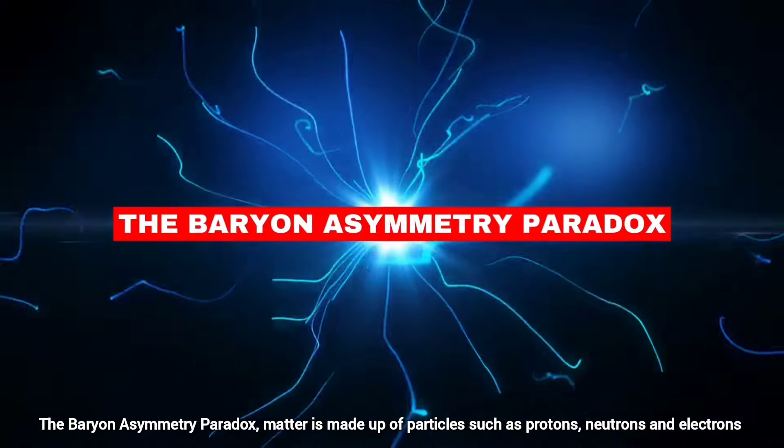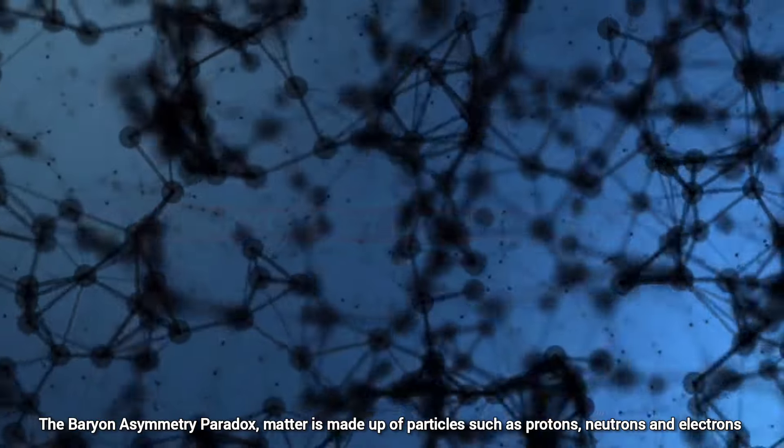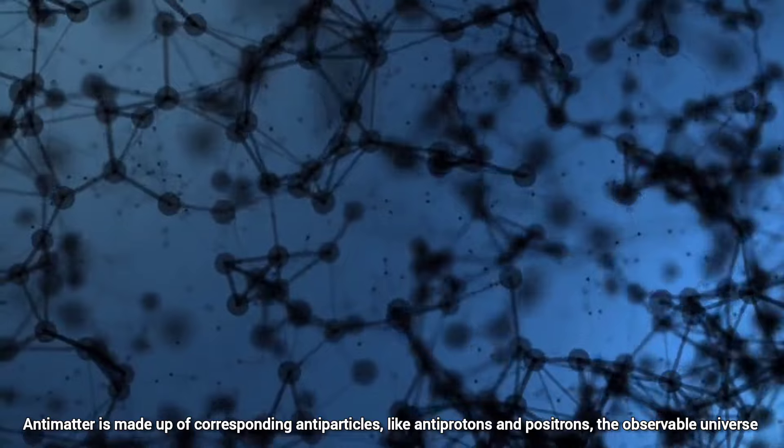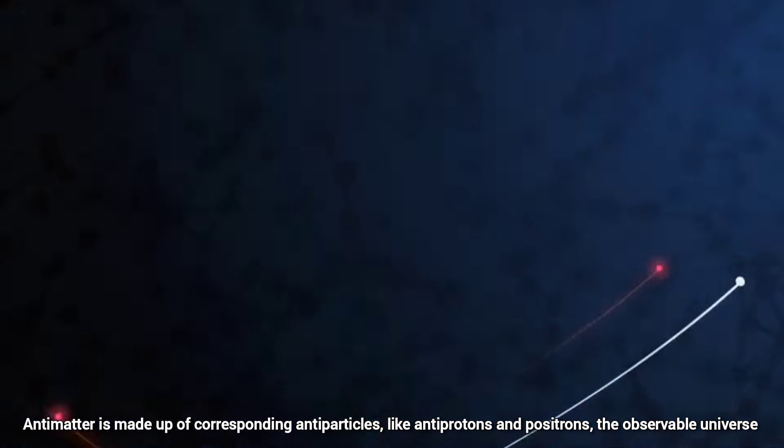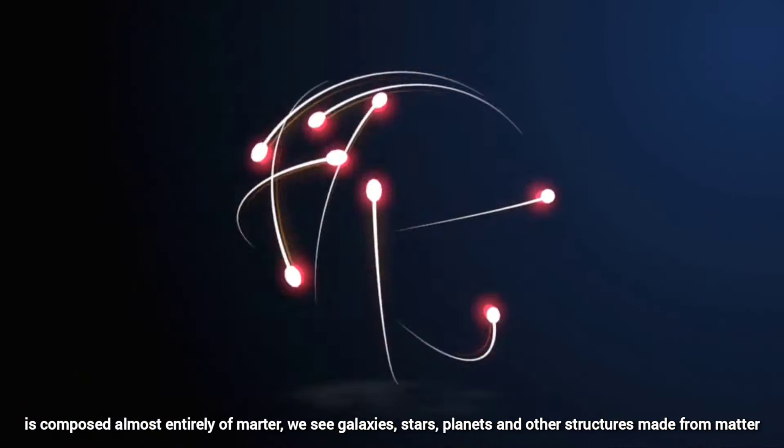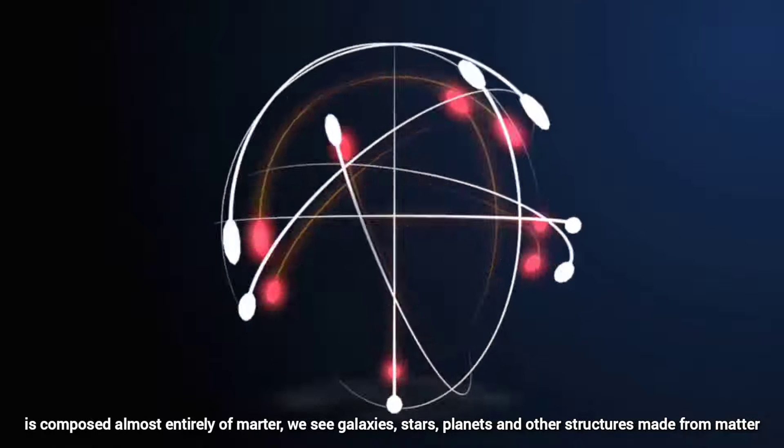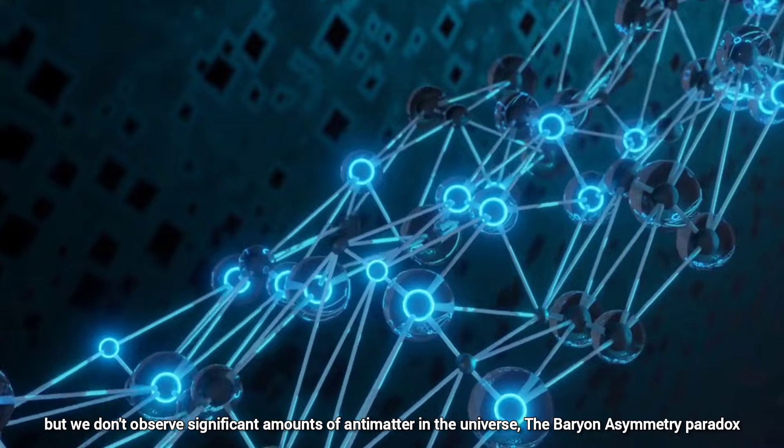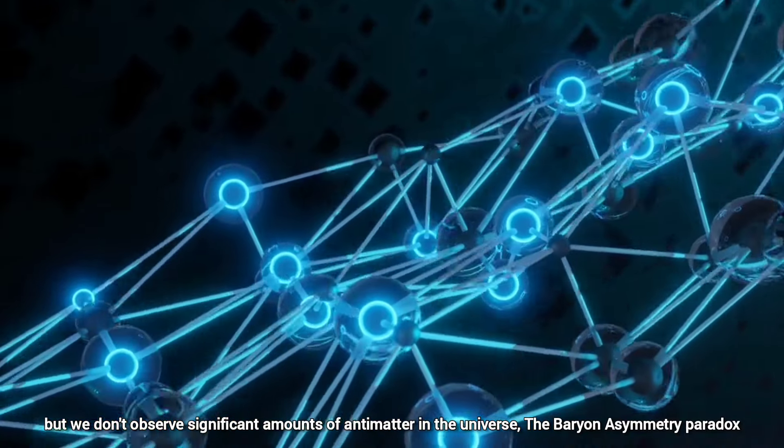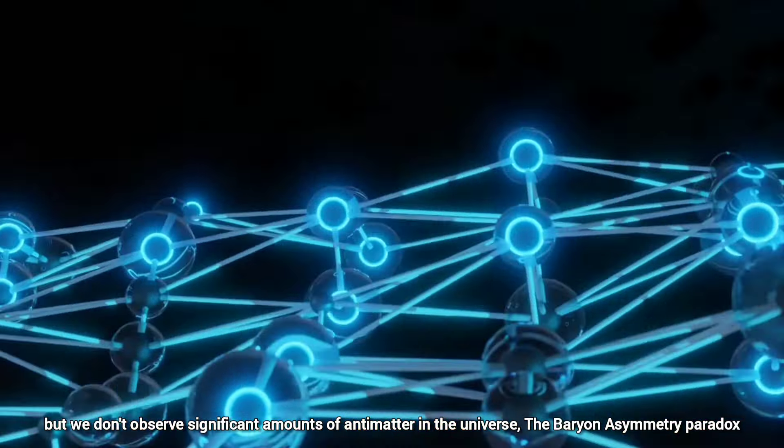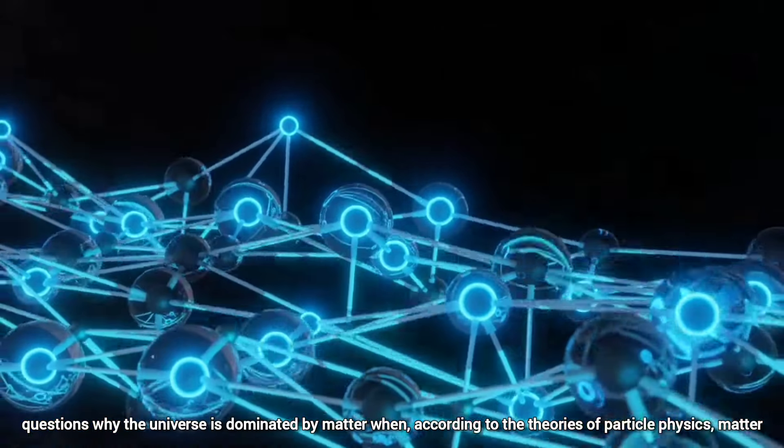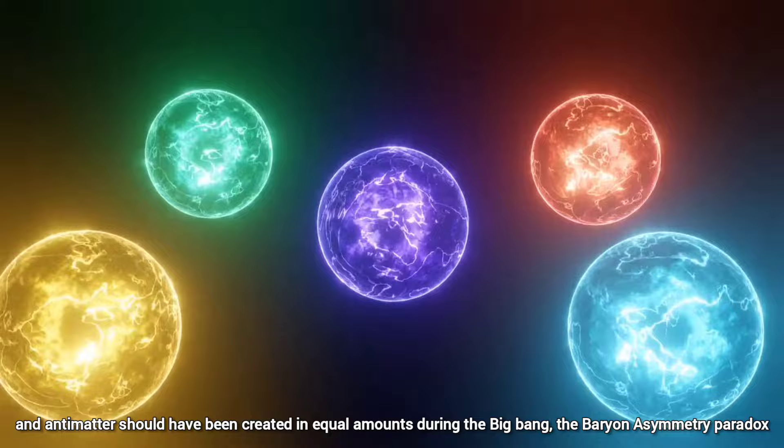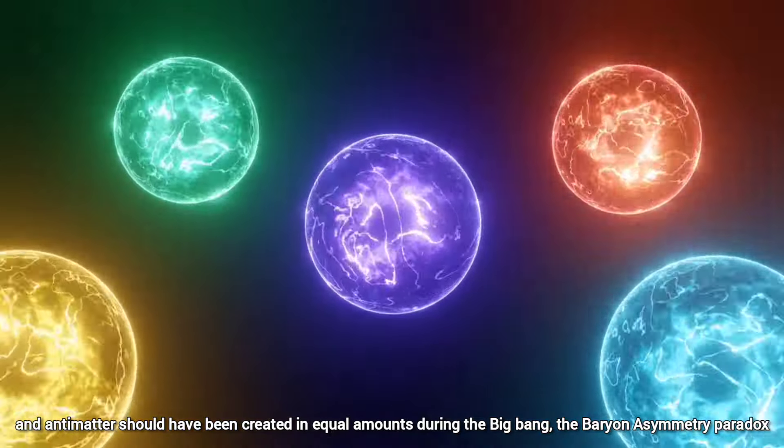The Baryon Asymmetry Paradox. Matter is made up of particles such as protons, neutrons, and electrons. Antimatter is made up of corresponding antiparticles like antiprotons and positrons. The observable universe is composed almost entirely of matter. We see galaxies, stars, planets, and other structures made from matter, but we don't observe significant amounts of antimatter in the universe. The Baryon Asymmetry Paradox questions why the universe is dominated by matter when according to the theories of particle physics, matter and antimatter should have been created in equal amounts during the Big Bang.